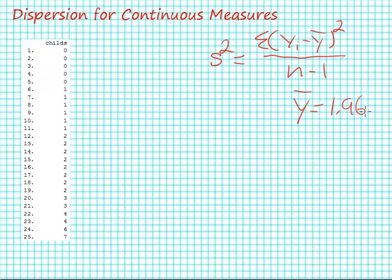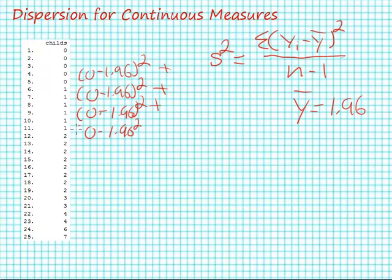So let's go ahead and look at a couple of these operations. I take case number 1, I need 0 minus 1.96, the quantity squared, plus 0 minus 1.96 squared, plus... You get the idea that this is repetitive.